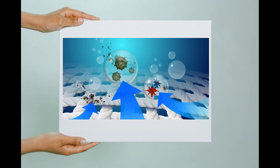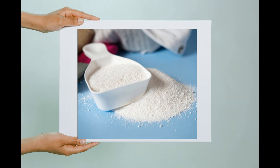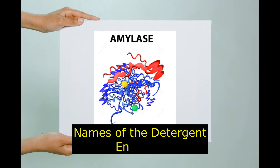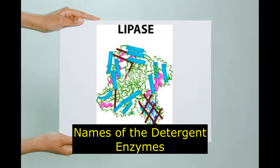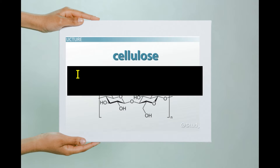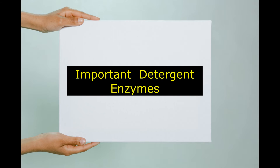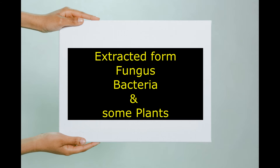Among the thousands of enzymes, very few are found to be very active in removing stains on fabrics. These few enzymes are called detergent enzymes — amylase, protease, lipase, and cellulase are some of the important ones capable of removing stains from fabrics. These enzymes are available in living systems like fungi, bacteria, and some plants.